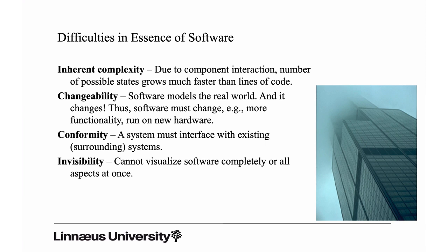The fourth characteristic is invisibility — something you may not have spent much time thinking about. You can't see software. Software is invisible in the sense that we only work on representations of it; source code is not software, it's a representation. Compare this to engineers constructing a bridge — they see the bridge grow and can spot problems. But for software, we work on models, and we have to be able to see problems in our models because the real software is very difficult to observe.